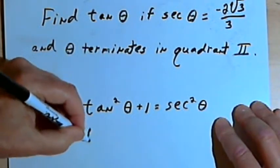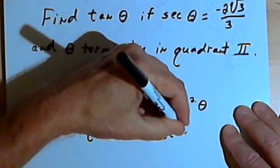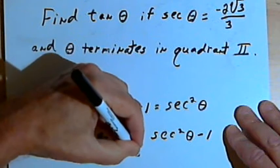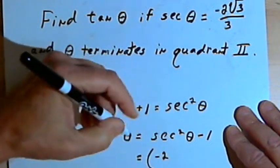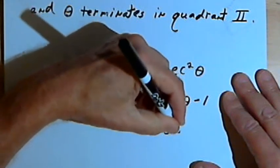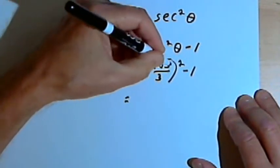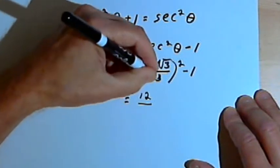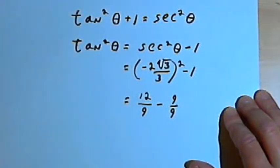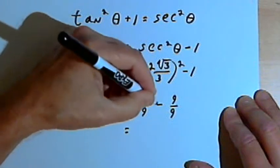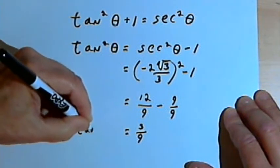We're looking for tangent, so let's isolate tangent squared: tangent squared of theta equals secant squared of theta minus 1. Secant of theta was negative 2 times the square root of 3 over 3, so we square that: negative 2 squared is 4, square root of 3 squared is 3, so 4 times 3 is 12, and 3 squared is 9. That gives 12 over 9 minus 1. Converting 1 to 9 over 9, we get 12 ninths minus 9 ninths equals 3 over 9. That's the tangent squared of theta.